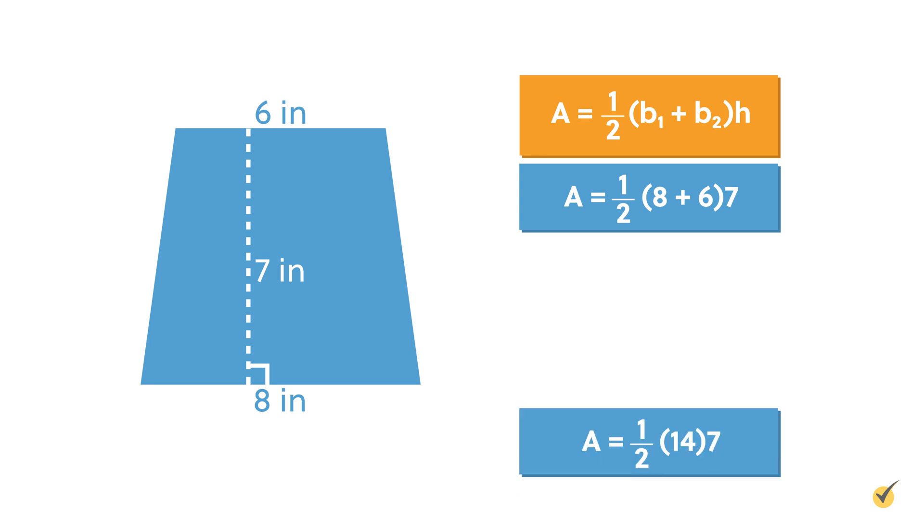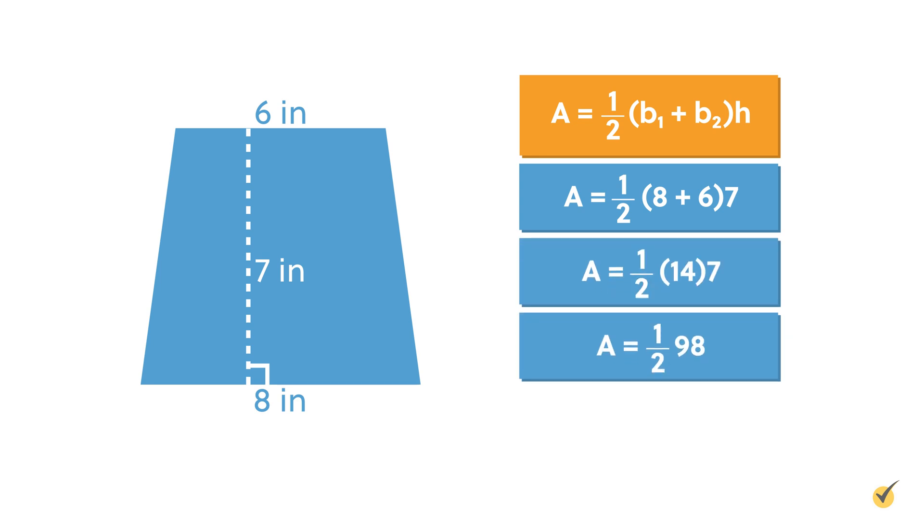Start by finding the sum of 8 and 6. Then, multiply 14 by 7 to get a product of 98. Finally, you can multiply 98 by one-half, or divide 98 by 2 to get a solution of 49 inches squared.